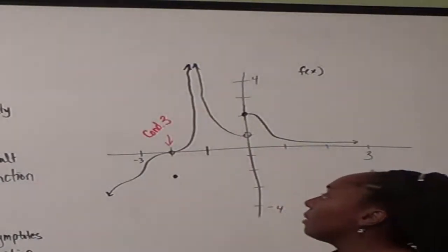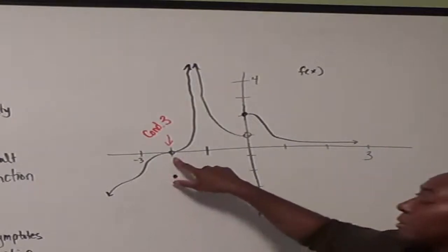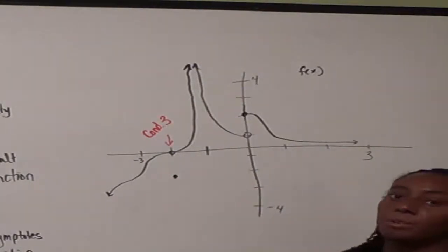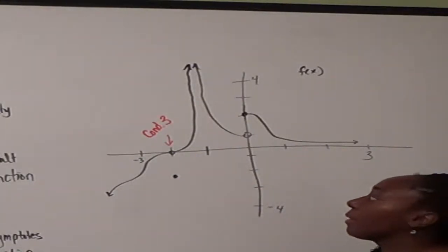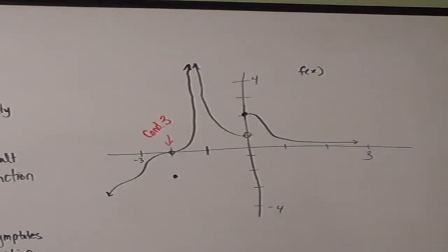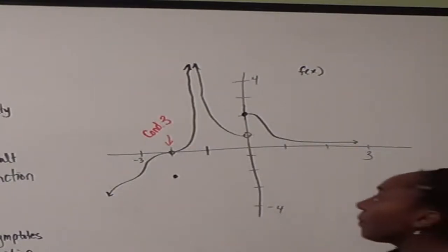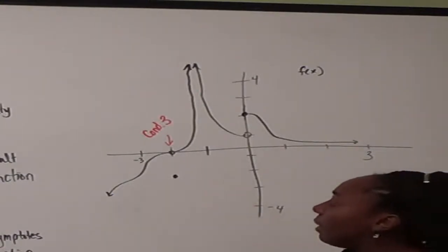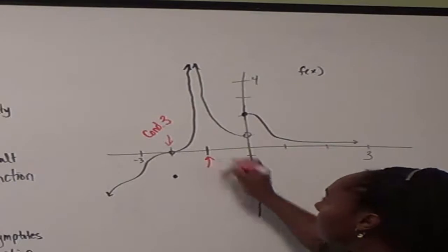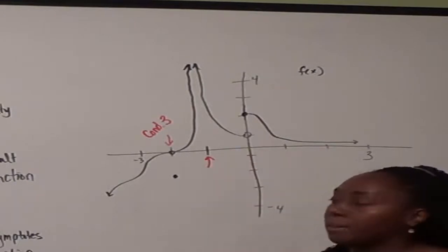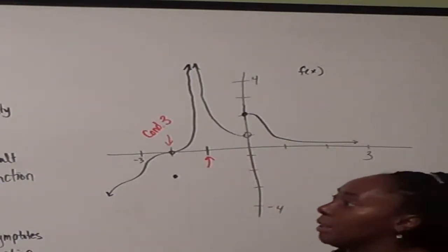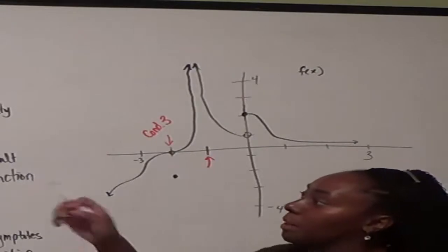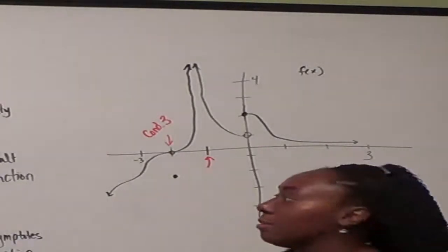The limit, which is 0, doesn't equal the function value, which is negative 2. In the second instance, at x equals negative 1, we have a discontinuity because the first condition fails.